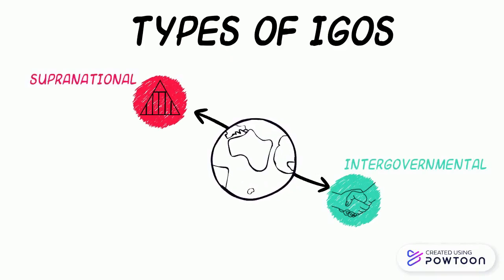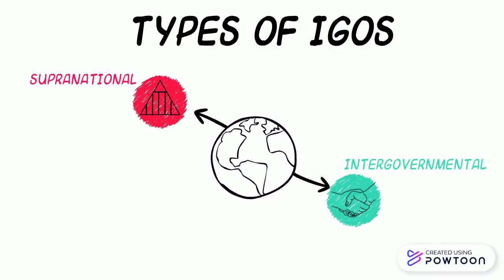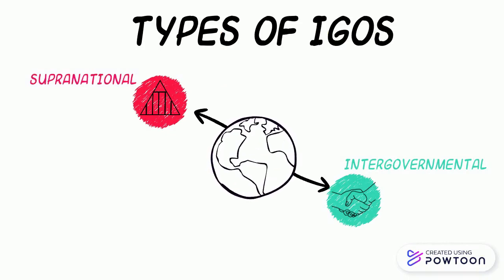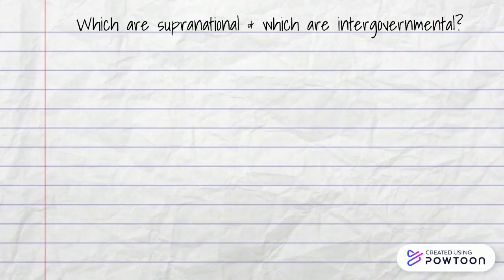So both supranational and intergovernmental organizations are formed by member states, aimed at dealing with global issues through cooperation at the international level. The key difference is the amount of power or sovereignty that the states give up.